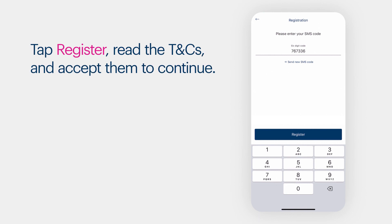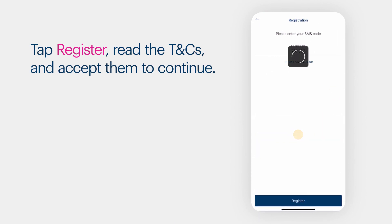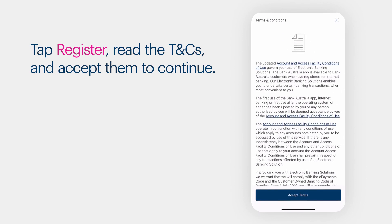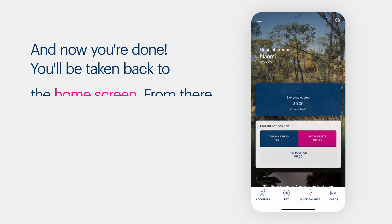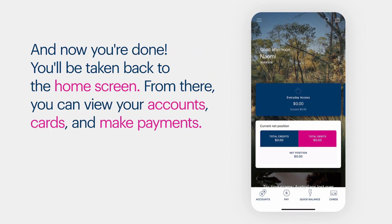Tap Register, read the terms and conditions and accept them to continue. And you're done. You'll be taken back to the home screen. From there, you can view your accounts, cards and make payments.